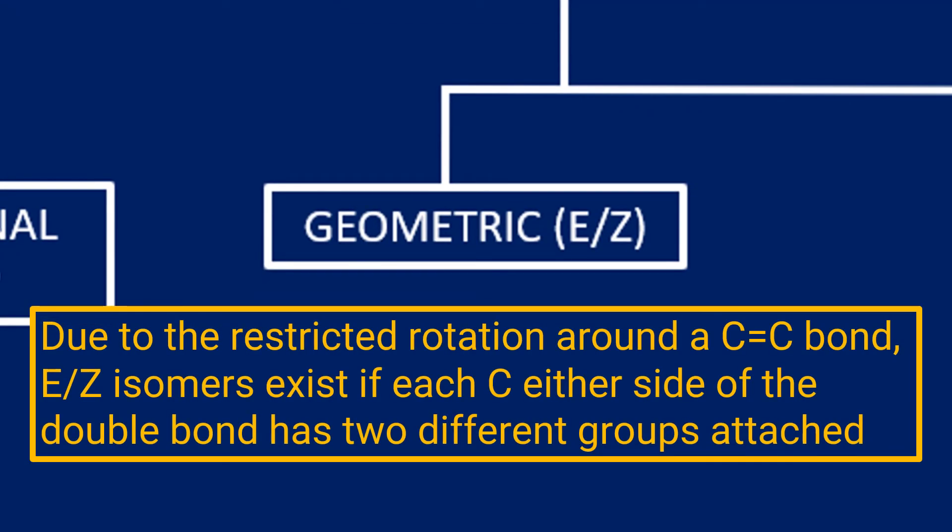Two types of stereoisomerism then: we've got geometric isomerism, sometimes called E-Z, and this occurs in our alkenes due to the restricted rotation around the double bond. That means that double bond locks the groups in place and they can't—there's no free rotation, that bond can't rotate.